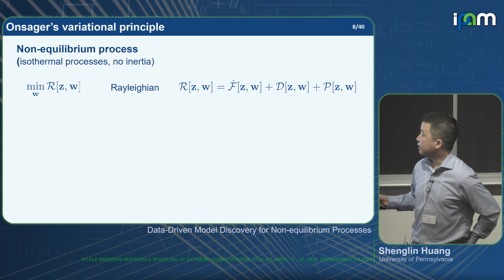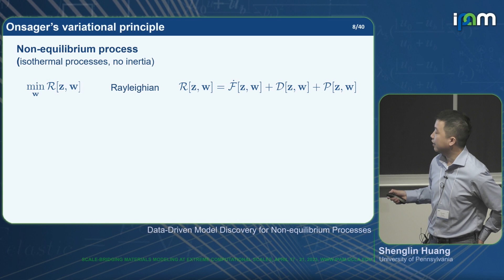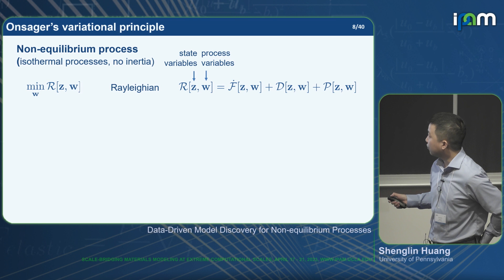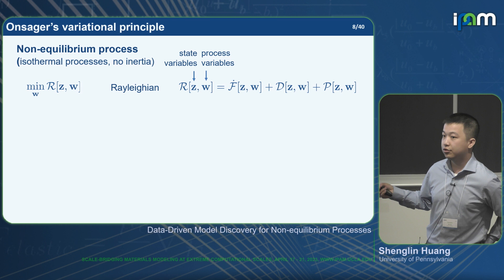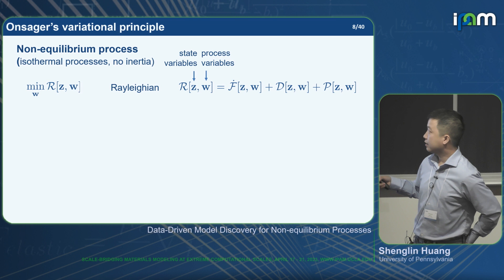The Onsager principle states that if the system is isothermal and has no inertia, we can define a functional called the Rayleighian. This functional is related to two kinds of variables. State variables — the snapshot of the system such as position, strain field, or concentration in a diffusion process — and process variables that describe the change between snapshots, such as velocity field, strain rate, or flux.